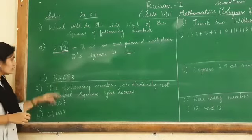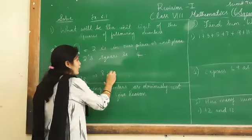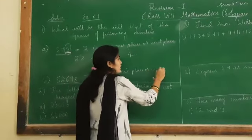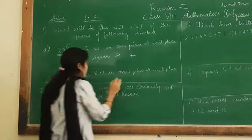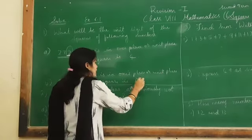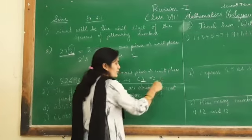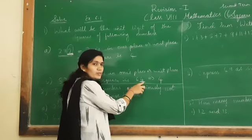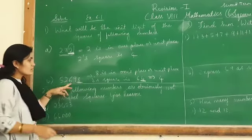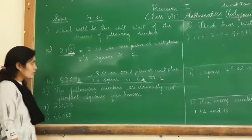Now let us move on to the next question, that is part B: 52,698. Here, 8 is in the unit place or 1's place. What is 8's square? 8's square is 64. And in 64, the 1's place digit is 4. So the unit digit of the square of 52,698 is 4, because 8 is in 1's place and its square is 64, and 4 is in 1's place of 64.